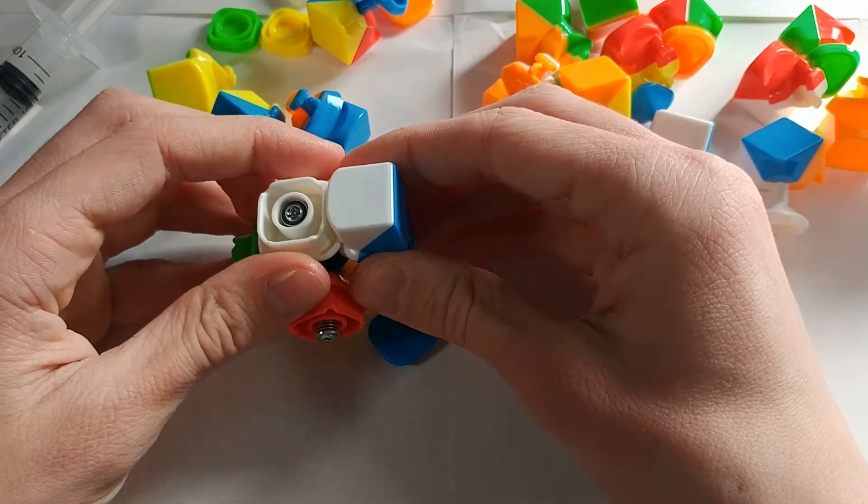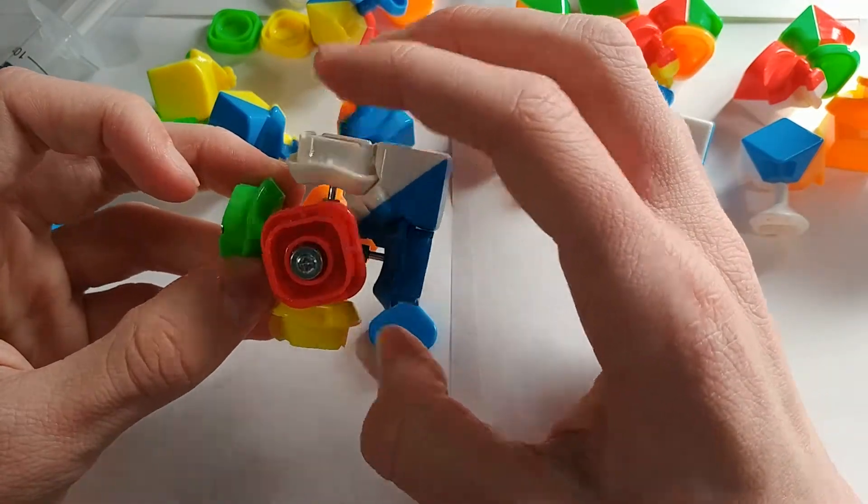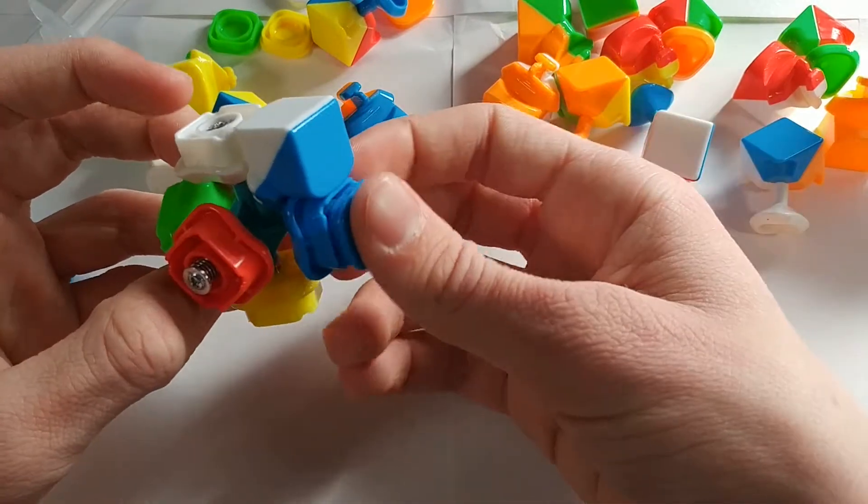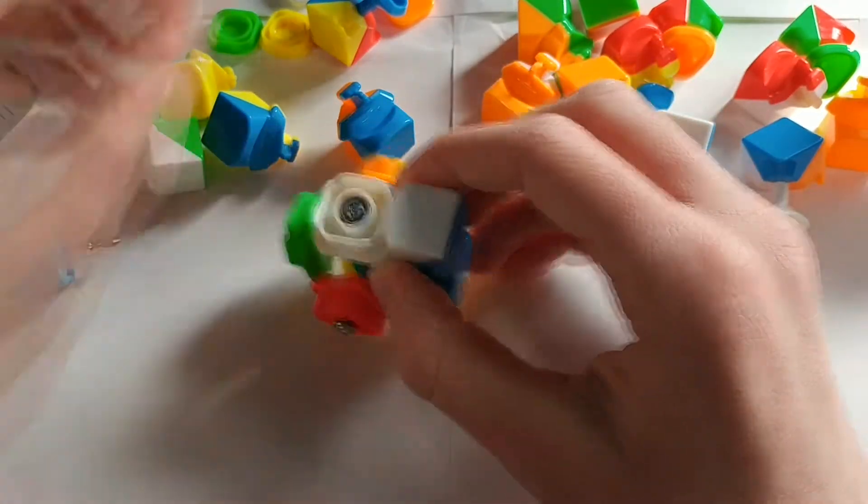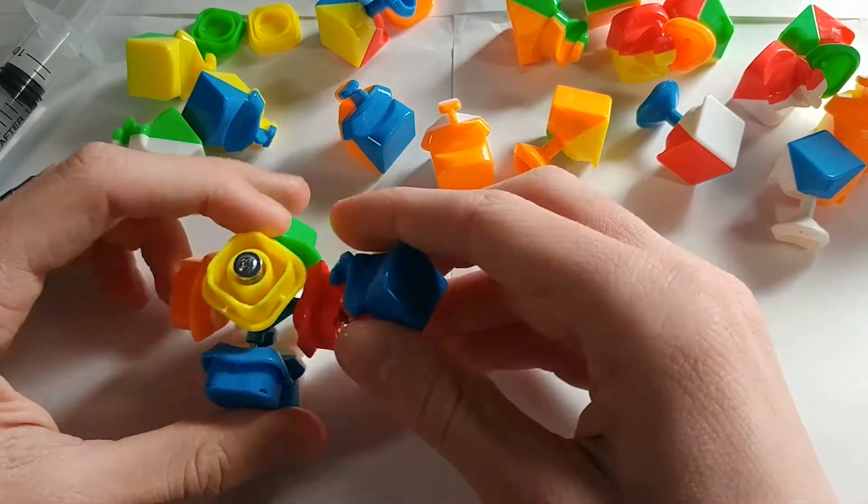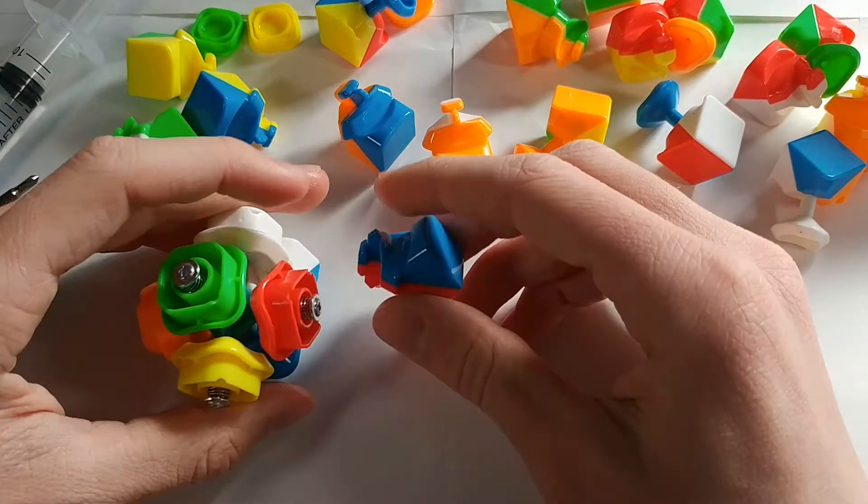So once I put an edge piece in, you see that these centers are held outward, and then I'll be able to put my center cap back on like so. So then we're going to continue with rebuilding our cube.